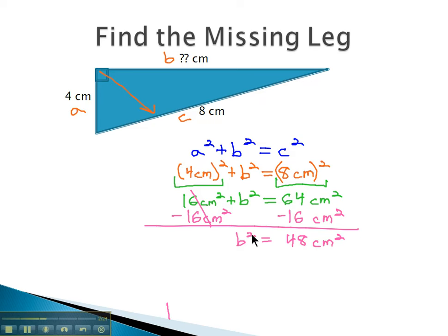Because the opposite of squaring a variable is to take a square root, we can finally get the b alone by taking the square root of both sides. Notice this is the very last step when we take the square root of both sides, because square and square roots are opposite, and we get b equals, and our calculator can tell us the square root of 48 is 6.93 centimeters approximately.